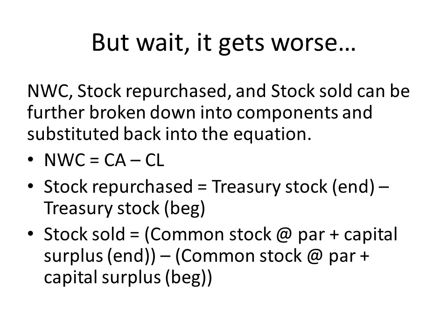We can actually make the equation even more complex by substituting in additional sub-component equations. For example, net working capital equals current assets minus current liabilities. Stock repurchased equals treasury stock at the end minus treasury stock at the beginning. Stock sold is more involved: total common stock equals common stock at par plus the capital surplus — we calculate that for the end period and subtract the same sum for the beginning period.